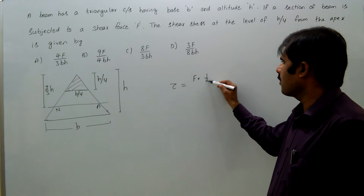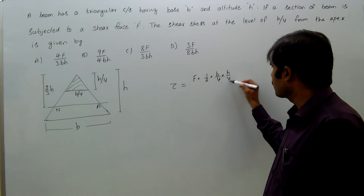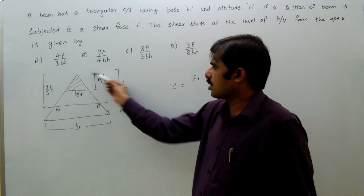That is, area is half into base B by 4 into height H by 4 into centroidal distance about this neutral axis: 2 third of H minus 2 third of H by 4.